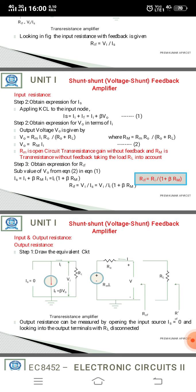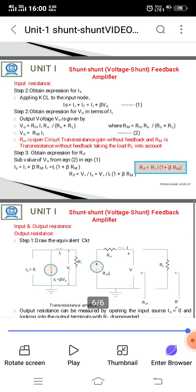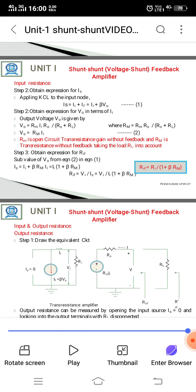Applying Kirchhoff's voltage law to the output side, we get RM times ii plus i times r0 minus v equal to zero. So i equals v minus RM times ii divided by r0. The input current ii is equal to minus beta times v. Therefore, the output feedback resistance R_OF is equal to r0 divided by 1 plus RM times beta.